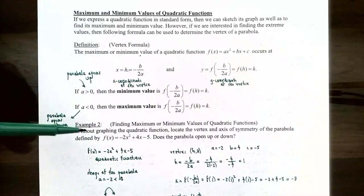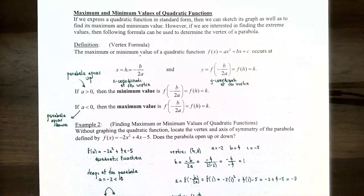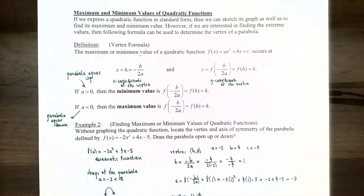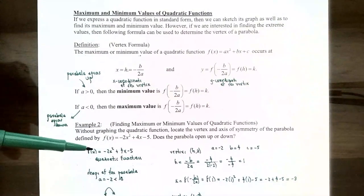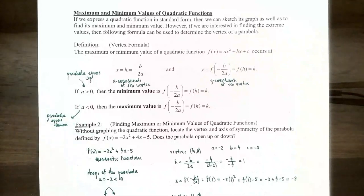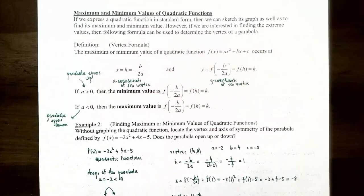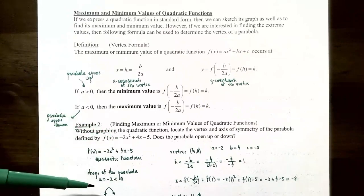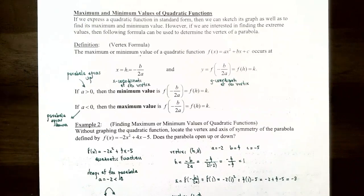Example 2: find the maximum or minimum value without graphing. Locate the vertex and axis of symmetry of the parabola defined by f(x) = -2x² + 4x - 5. Notice that a is negative 2, which is negative, so the parabola will open down. That means the vertex will be a local maximum point, and we want to find the local maximum value without graphing.